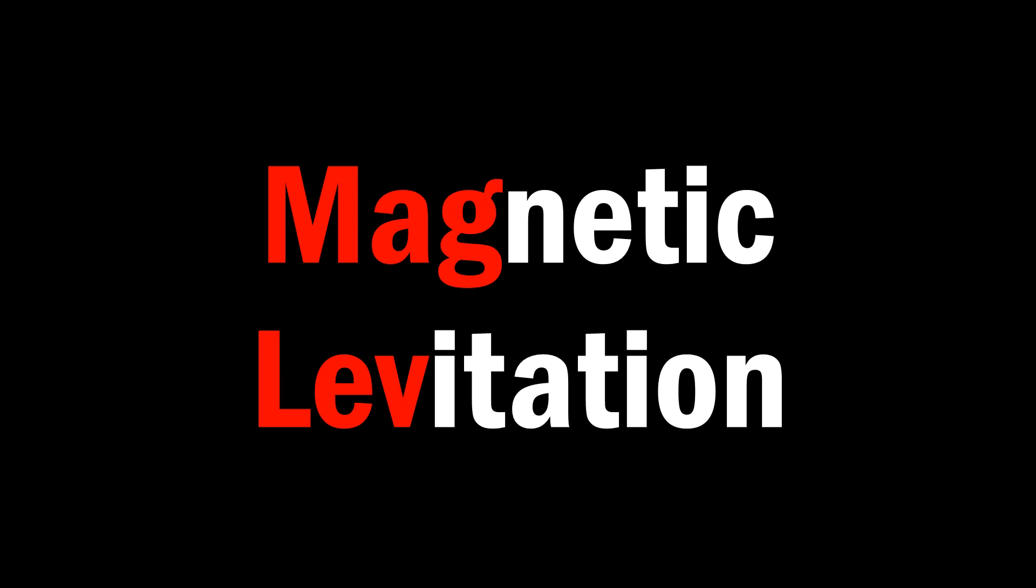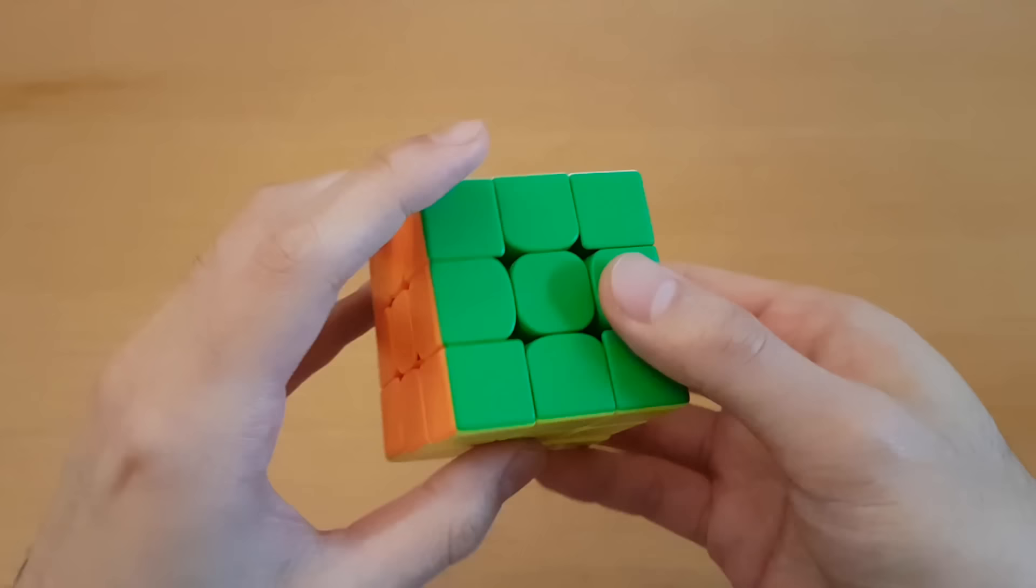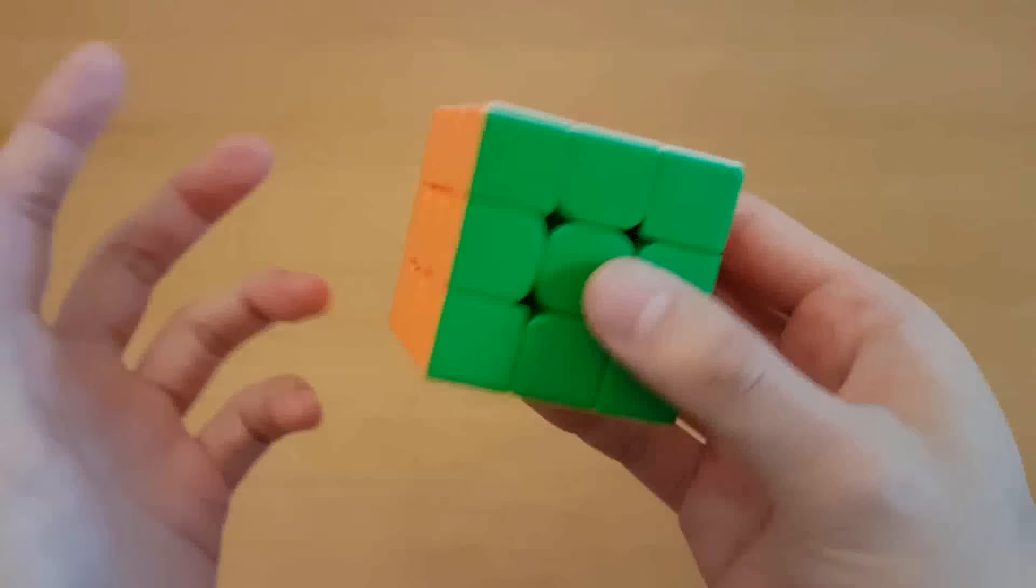One magnet levitates on the other, hence magnetic levitation, and with this, there is no friction in the core, which allows the cube to be much faster.